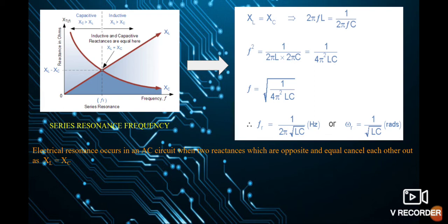Now here is shown the graph for series resonance frequency. Under resonant condition, XL equals XC. By substituting the values of XL and XC — that is 2 pi F L and 1 by 2 pi F C — and cross multiplying, we get F squared equals 1 by 4 pi squared LC. So the resonant frequency is F equals 1 by 2 pi root over of LC, and in terms of omega it is 1 by root over of LC radians per second.